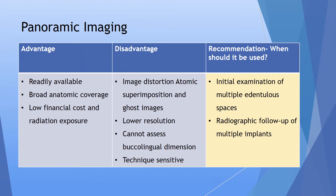Moving on to panoramic imaging. Panoramic imaging has the advantage of again being readily available, with broad anatomic coverage — you can see the entire maxillary and mandibular arches — and relatively low financial cost and radiation exposure. The disadvantage is that there is image distortion, anatomic superimposition, and ghost images do occur. It has relatively low resolution because it's an extraoral method of imaging. You cannot assess the buccolingual dimension, and it is definitely technique sensitive, requiring expertise to take and interpret the panoramic radiograph.